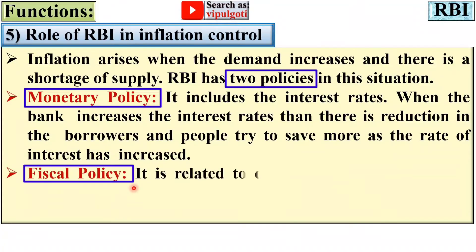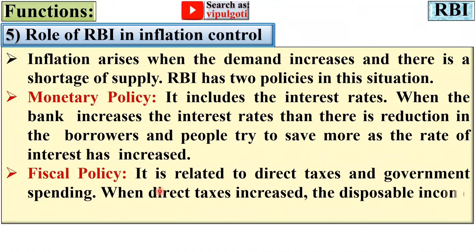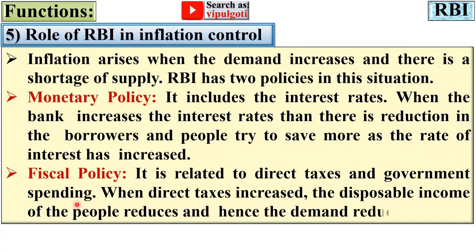The second policy to control inflation is fiscal policy. It is related to direct taxes and government spending. When direct taxes increase, the disposable income of the people reduces, because most of the income is used for direct taxes. As a result, demand reduces.